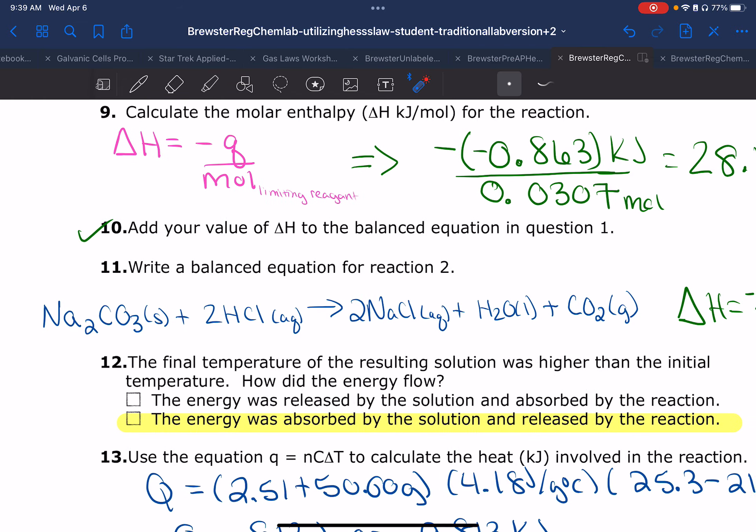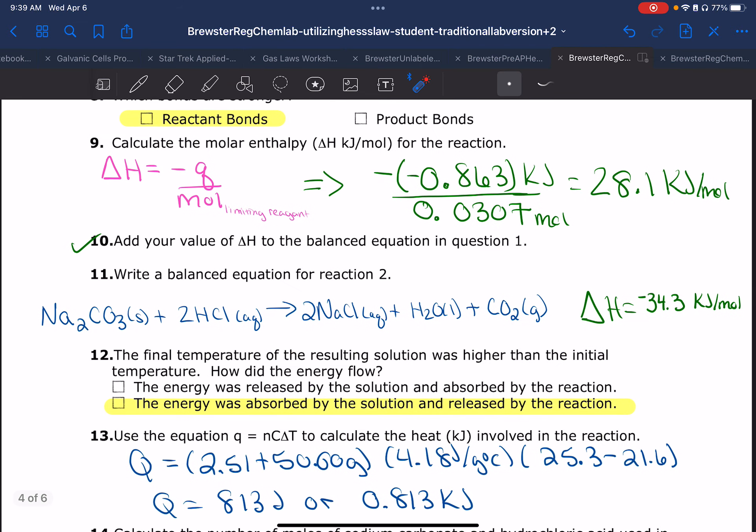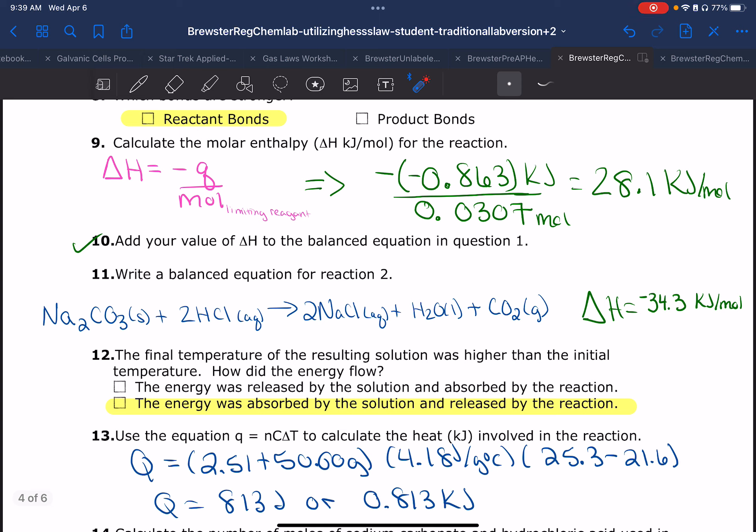Then we're going to set up question number thirteen just like we did earlier. We have the 2.51, which was my mass of my solid, plus my 50 grams of my solution. Here's my specific heat and here is my change in temperature. This one, hopefully you realize, was getting warmer, so I'm going to have a positive change here. I calculate 813 joules, I divide by a thousand, and I get 0.813 kilojoules.